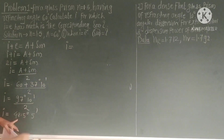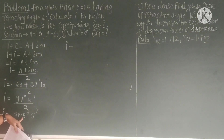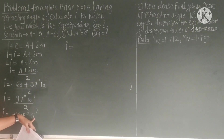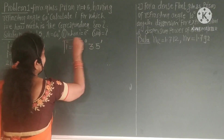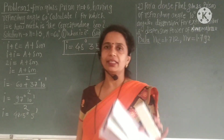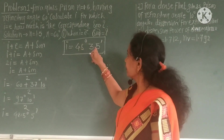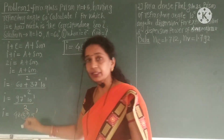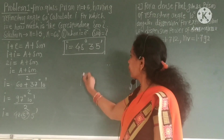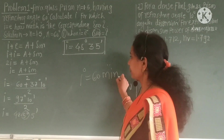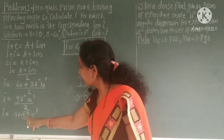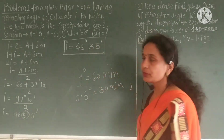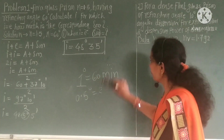Here 48.5 degrees — the 0.5 degree equals 30 minutes. So 30 minutes plus 5 minutes equals 35 minutes. Therefore i equals 48 degrees 35 minutes. This is the value of the angle of incidence. Note: 0.5 degrees equals 30 minutes because 1 degree equals 60 minutes.